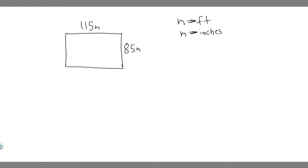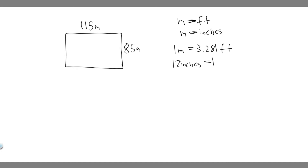The first thing you need to know is a few conversions: how many feet are in a meter. You need to know that for every one meter, there are 3.281 feet. And then how many inches per foot — there are 12 inches for every single one foot. So these are the two conversions we're going to use to solve this.